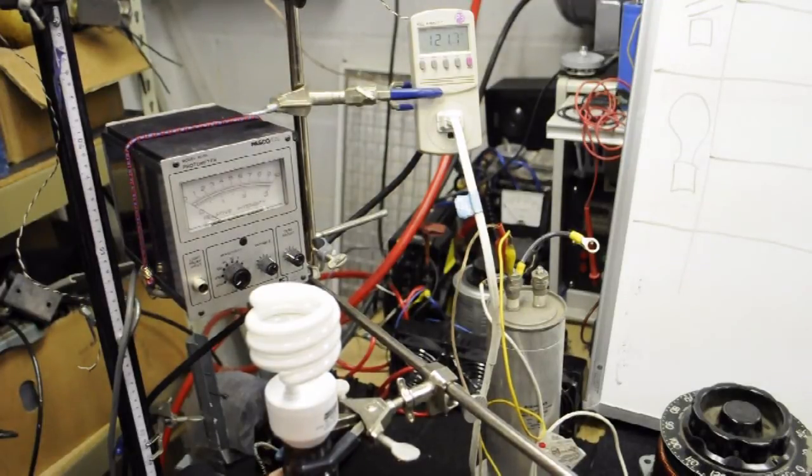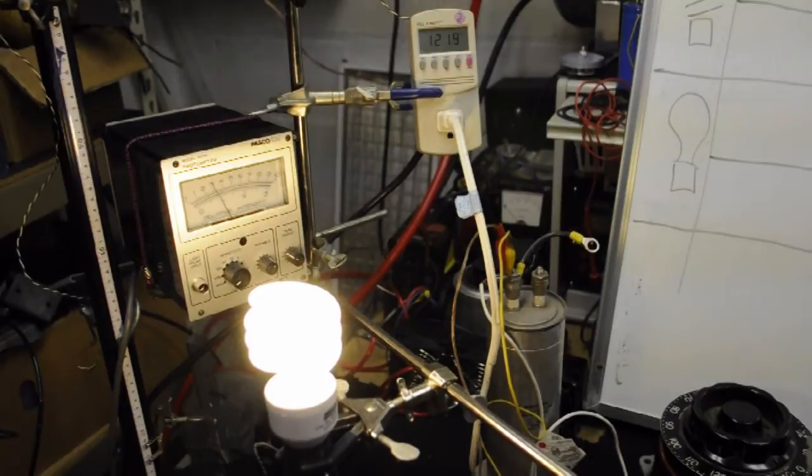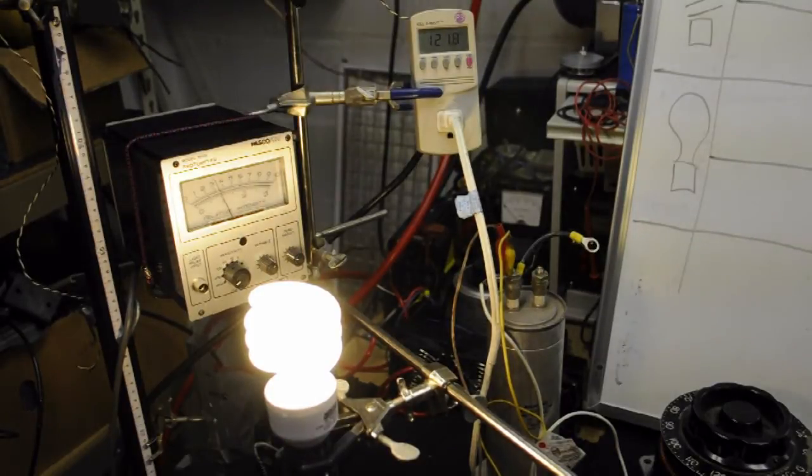So first thing to do is fire it up and right there we're at 3,000. Now like most CFLs we're going to have to let it warm up. With incandescence you don't have this problem. So right there we're at 32, and there's 34.